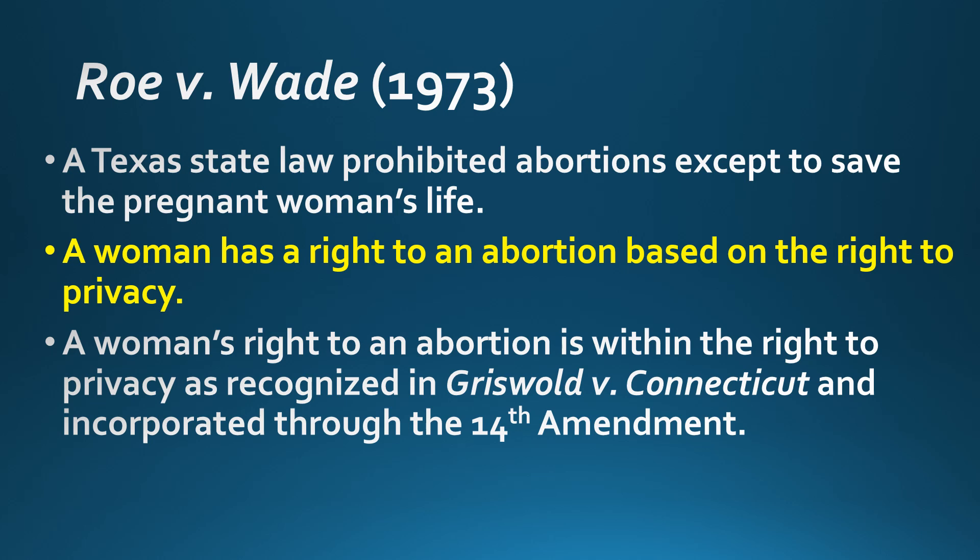Roe versus Wade, 1973, is one of the most contentious Supreme Court cases in U.S. history. A Texas law prohibited abortions except to save the life of the pregnant woman. The case established that a woman has a right to obtain an abortion, based on the right to privacy discovered in Griswold versus Connecticut eight years prior. This right to privacy is incorporated through the 14th Amendment, so neither states nor the federal government can ban the right to an abortion.